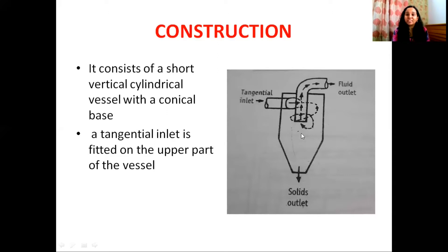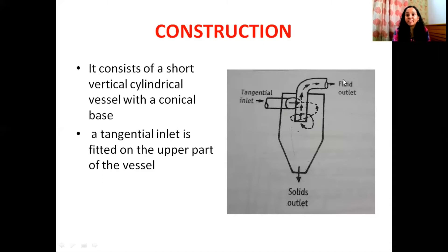The tangential inlet is used by the air-suspended particles. The solid-suspended air stream is introduced into the Cyclone Separator through the fluid outlet. The fluid outlet protrudes into the vessel. The tangential inlet is used by the vessel to direct the air. It leads directly to the outlet, which acts as a preventable outlet.